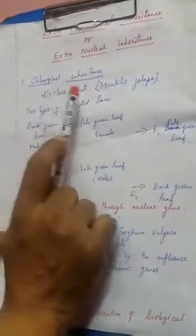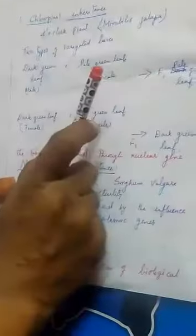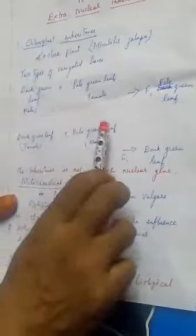The first example of chloroplast inheritance is the four o'clock plant, Mirabilis jalapa. Two types of leaves are selected: dark green leaf and pale green leaf. When pollen from the dark green leaf plant is transferred to the stigma of the pale green leaf plant, and the pollen of the pale green leaf plant is transferred to the stigma of the dark green leaf plant, the F1 generation of both crosses must be identical as per Mendelian inheritance.